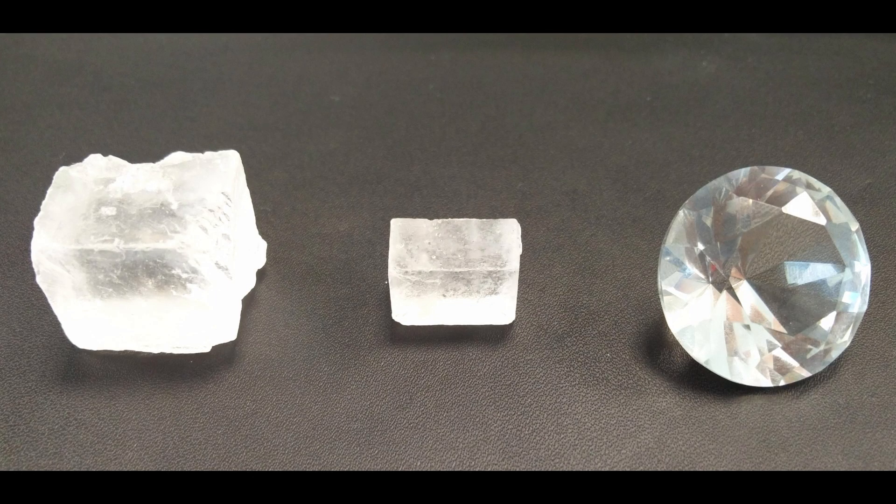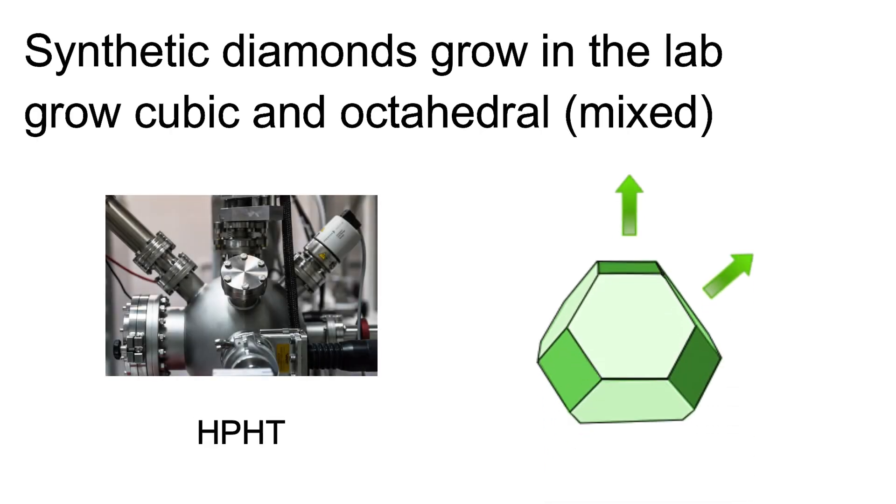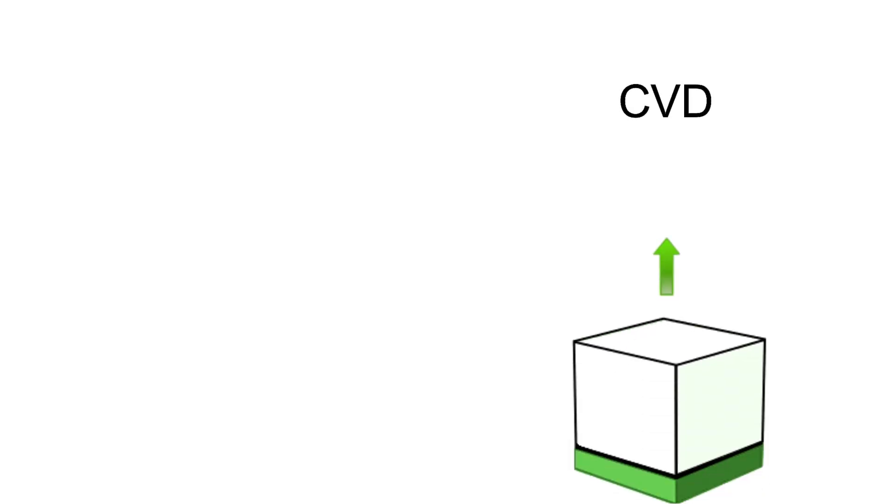Natural diamonds usually form in octahedral shapes. Within the earth, diamonds grow towards 8 directions in temperatures that are higher than what is used in the laboratory. During synthetic production using the HPHT method, diamonds crystallize in mixed shapes, cubic and octahedral. CVD diamonds grow in one direction only, upwards, layer for layer, like in the picture to the right.